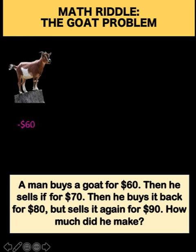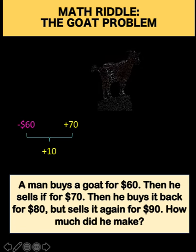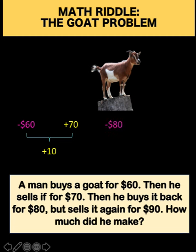Let's begin with the man buying the goat for $60. From the point of view of the man, since he bought the goat and the money is going out, let's denote it as negative $60. The color pink means the money is going out — it's an expense. Then the same goat is sold by the man for $70, so at this point the man has a profit of $10. Then after selling the goat, the man buys it back for $80, so the man has to pay an additional $10 to buy the same goat. Then he sold the goat for $90.